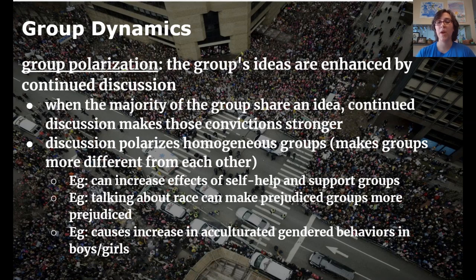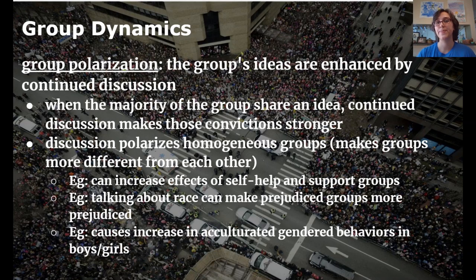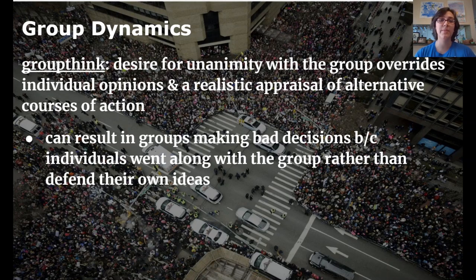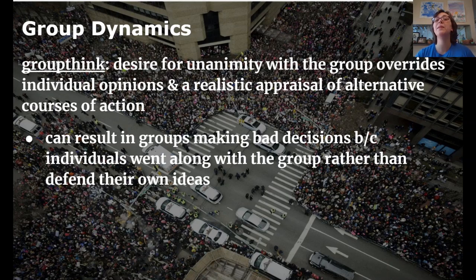The way polarization happens is if the group is homogeneous. If you have people with a bunch of different viewpoints discussing together, the opposite happens — people tend to come back toward the middle instead of getting more polarized. So the similarity of a group makes that similarity stronger. Next is groupthink: when you're in a group sharing a schema, your individual differing opinions get suppressed or overridden because the desire to be unanimous with the group is stronger than sharing your own perspective. This can result in groups making bad decisions.